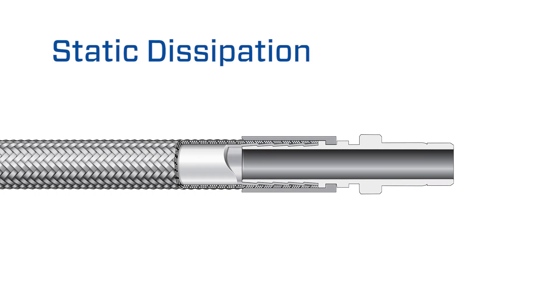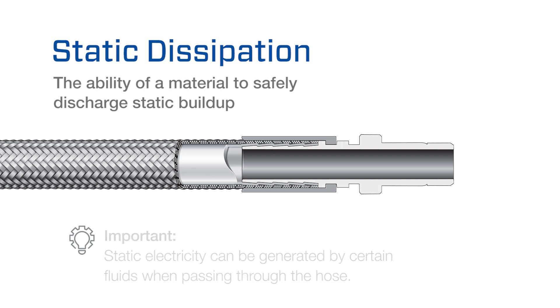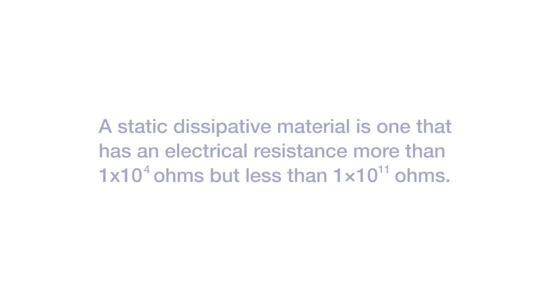Static dissipation is the ability of a material to safely discharge static buildup. This is important because static electricity can be generated by certain fluids when passing through the hose. A common definition of a material that is static dissipative is one that has an electrical resistance more than 1×10⁴ ohms but less than 1×10¹¹ ohms.